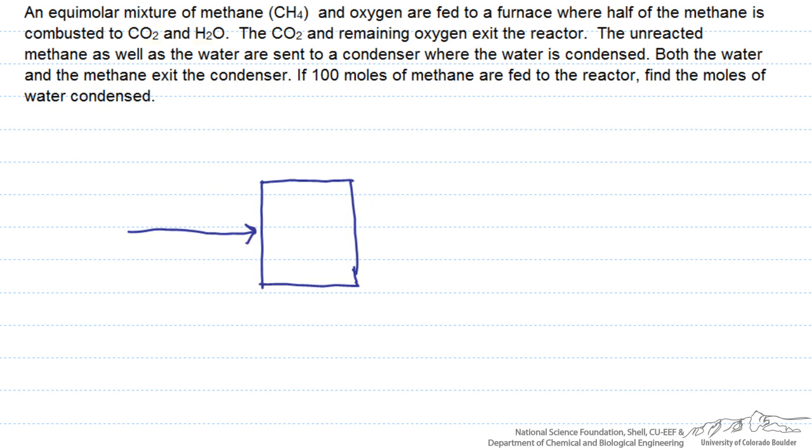Half of the methane is combusted to CO2 and H2O. The CO2 and remaining oxygen exit the reactor. The unreacted methane, as well as the water, are sent to a condenser where the water is condensed. Both the water and the methane exit the condenser.